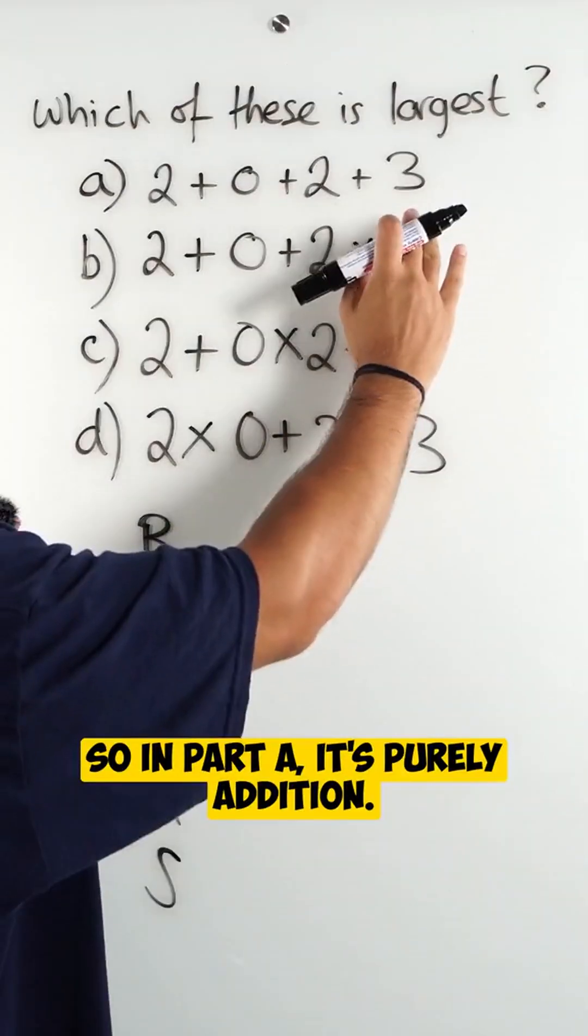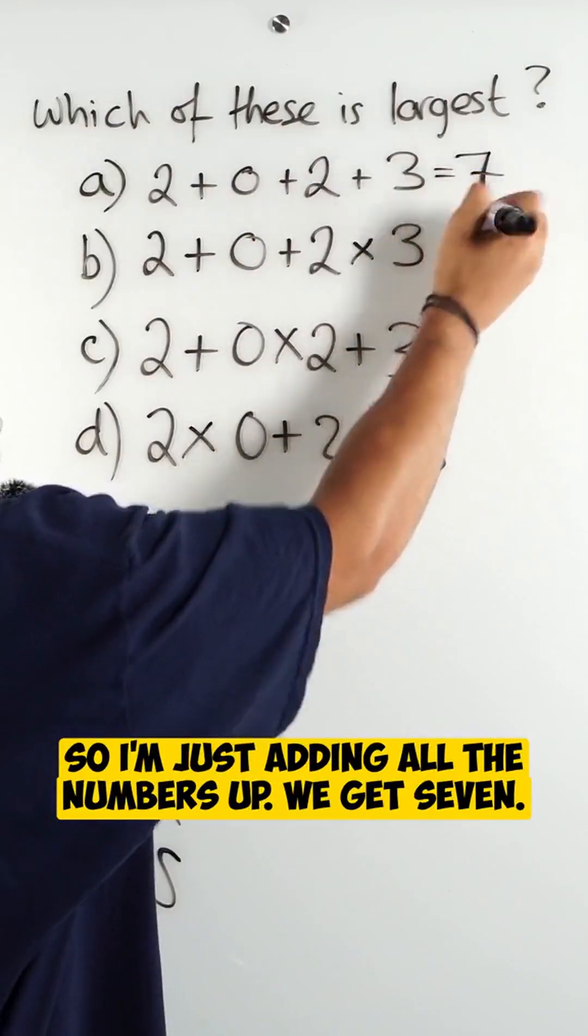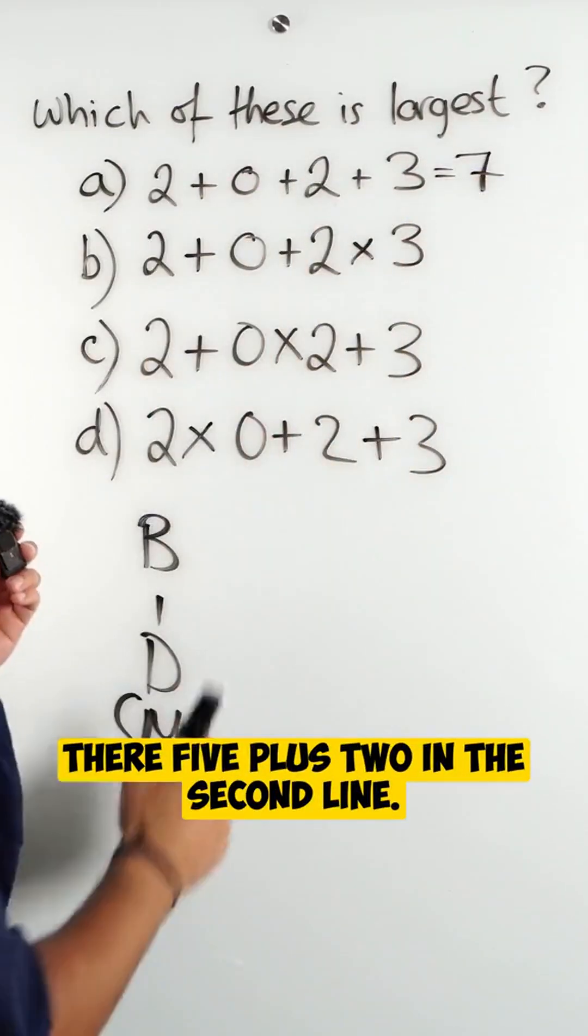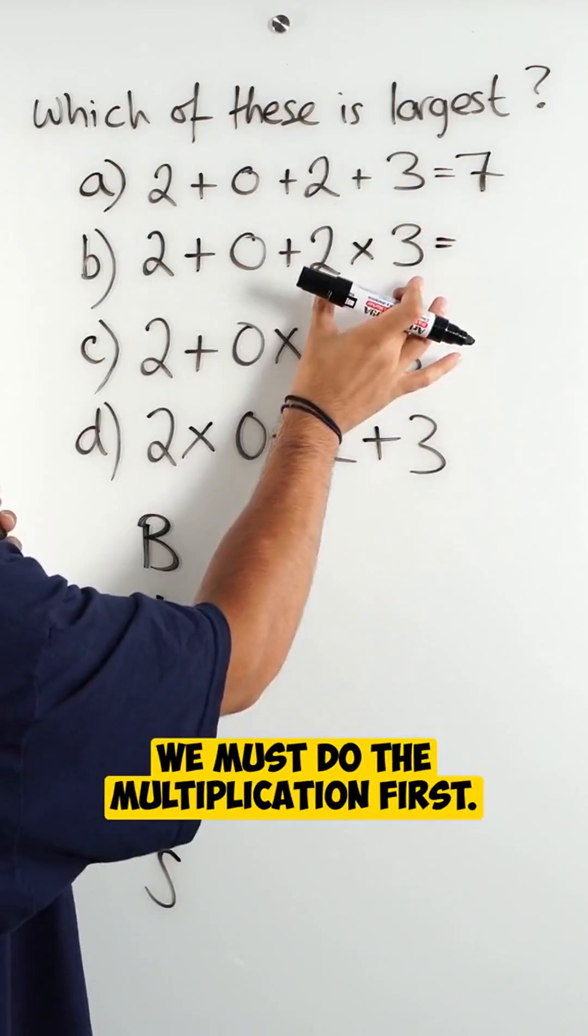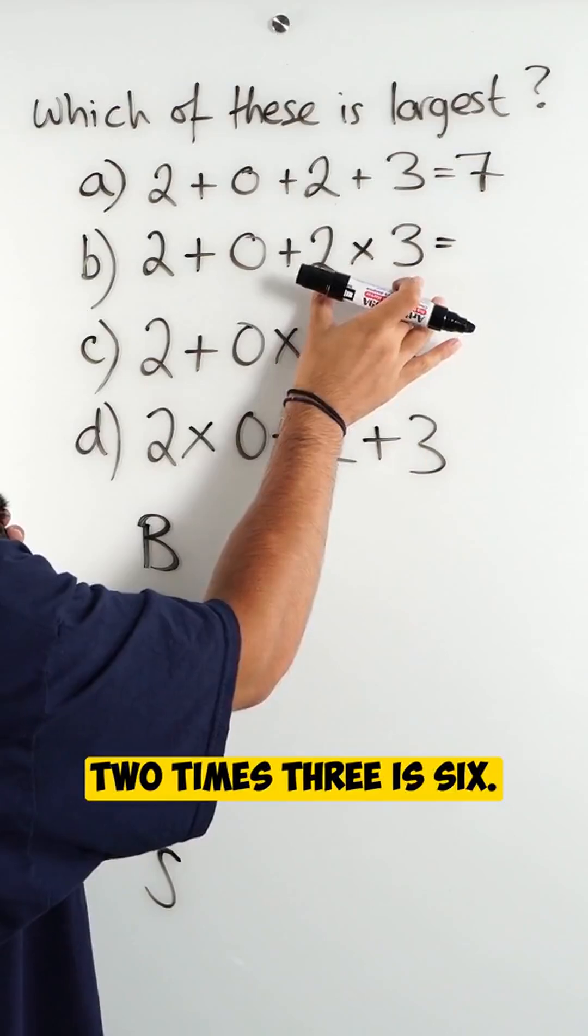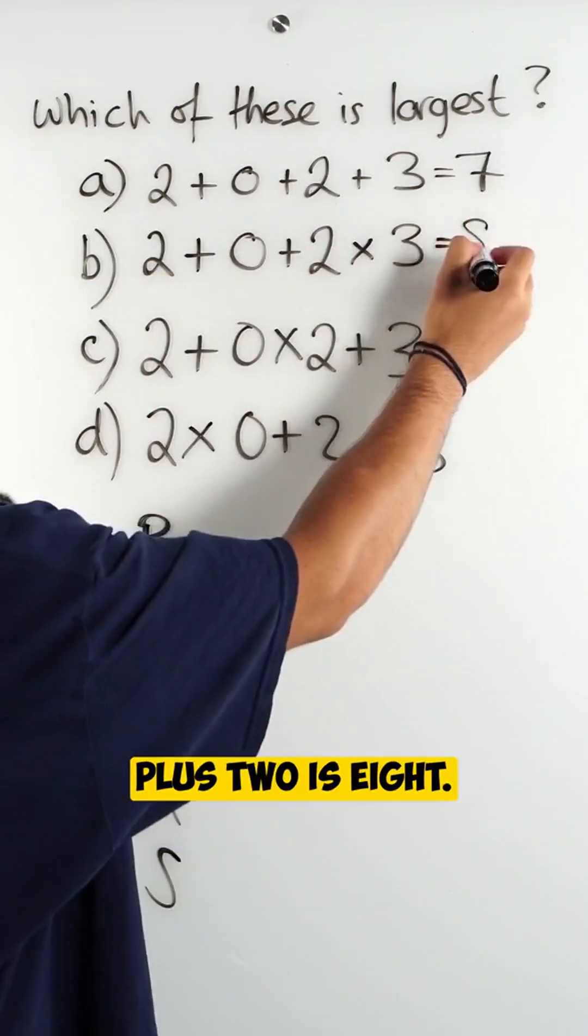So in part a is purely addition, so I'm just adding all the numbers up. We get 7 there. In the second line we must do the multiplication first. 2 times 3 is 6, then plus 0 doesn't do anything. Plus 2 is 8.